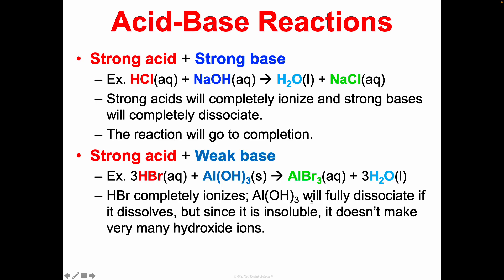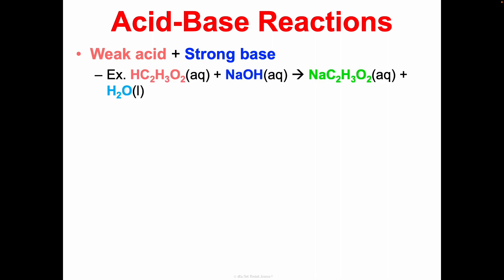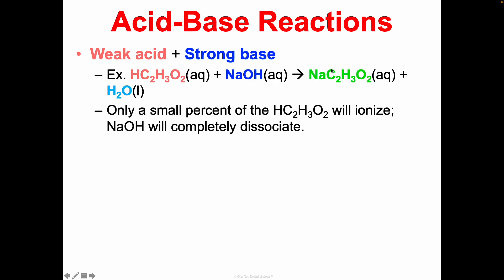With a strong acid and strong base, you don't have any hydrochloric acid or sodium hydroxide left — just water and the salt. For a strong acid with a weak base, here's an example with HBr and aluminum hydroxide making aluminum bromide and water. HBr will completely ionize because it's a strong acid, but aluminum hydroxide is insoluble so it doesn't produce as many hydroxide ions as it could. There will still be some aluminum hydroxide remaining, though the reaction goes to completion using up the limiting reactant.